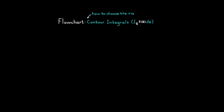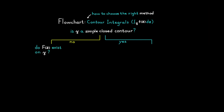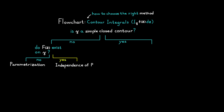The process to apply anytime you're going to solve a contour integral is the following. First, determine if the contour gamma is a simple closed contour. If no, check if the antiderivative exists on the contour gamma. If that is also no, use parameterization. But if the antiderivative exists on gamma, you can use independence of path.